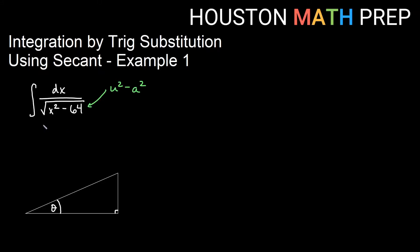we have our substitution be u equal to a times secant of theta to give us what we need for a Pythagorean identity. So in this instance, a is going to be 8 here and u is going to be x.